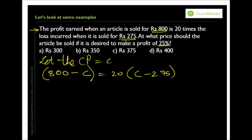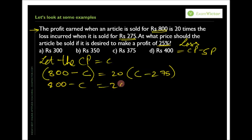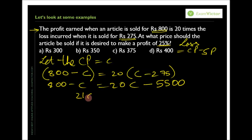We write loss as CP minus SP to avoid a negative sign. Solving: 800 − C = 20C − 5500. So 21C = 6300, giving C = 300. Now the second part: at what price should the article be sold for a 25% profit? We need a selling price that is 25% more than 300. 25% of 300 is 75, so the selling price is 300 + 75 = 375, which is option C.